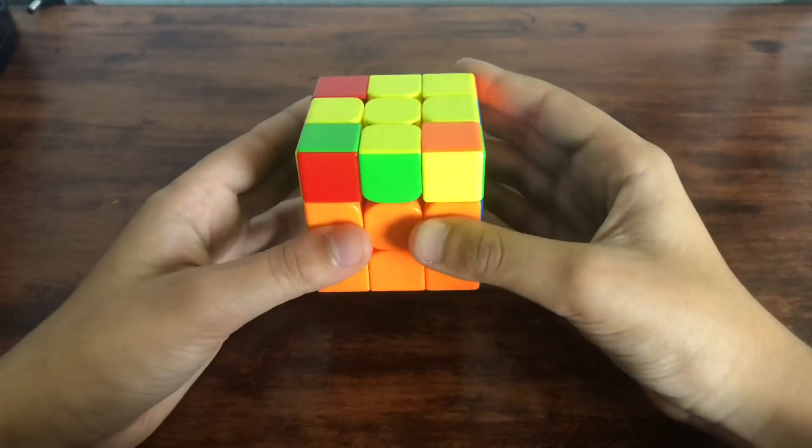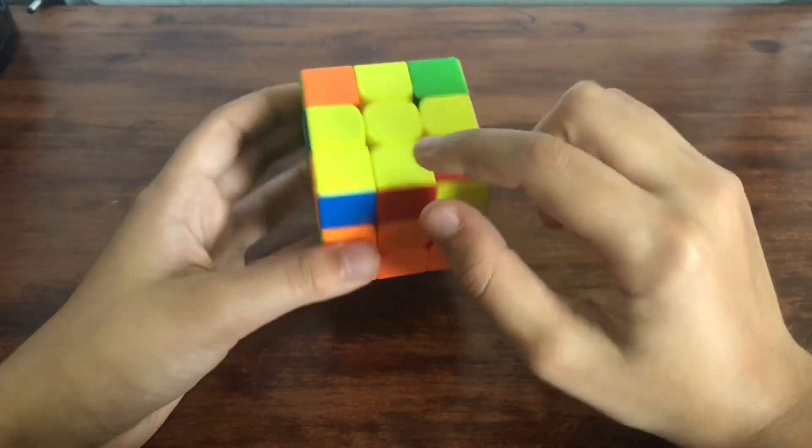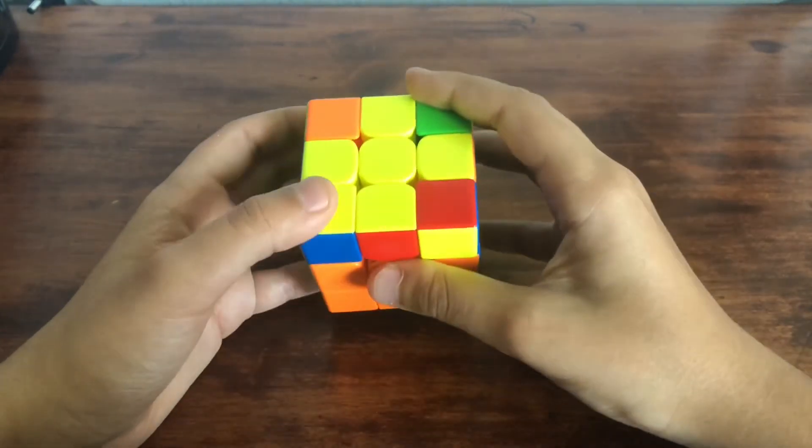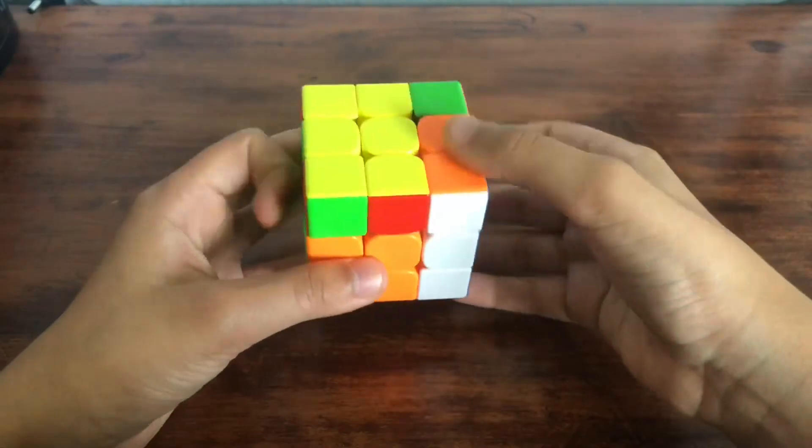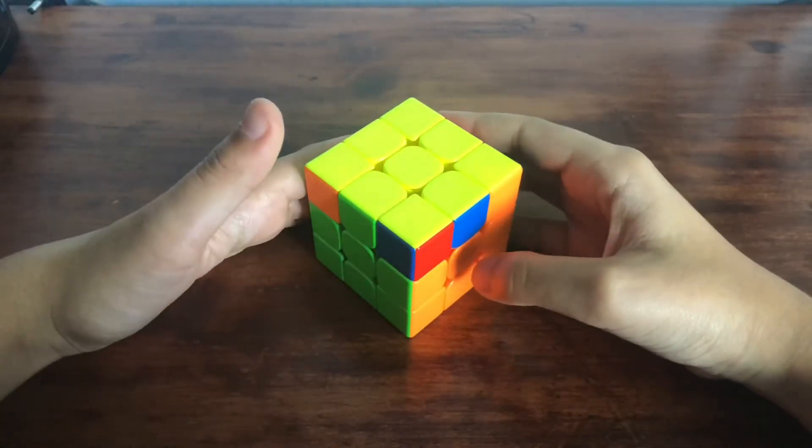Now if you move it around, you can see that this block is over here and this one is facing you. So you can do this case, and there you have it. That's how you can do OLL with no algorithms.